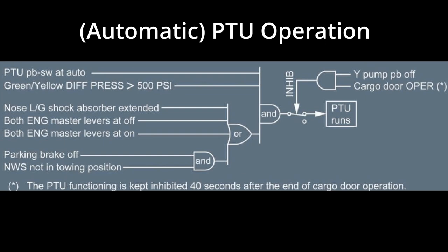Looking at the logic schematic, the first two conditions are the basic master conditions which must be met in order for the PTU to run. The PTU pushbutton switch must be in its normal auto position, and there must be a difference of pressure of more than 500 PSI between the green and yellow hydraulic systems, implying that one side has lost its source of pressure and requires the PTU's help to pressurize it.